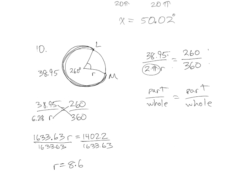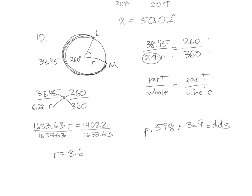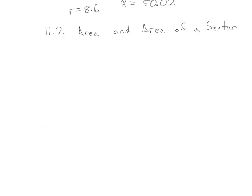The homework for 11.1 is on page 598, and you are going to do the odds 3 through 9. You can stop this video and do 11.1 now if you want, then come back and continue with section 2. Now I'm going to move on to 11.2 — we are finding area and area of a sector.